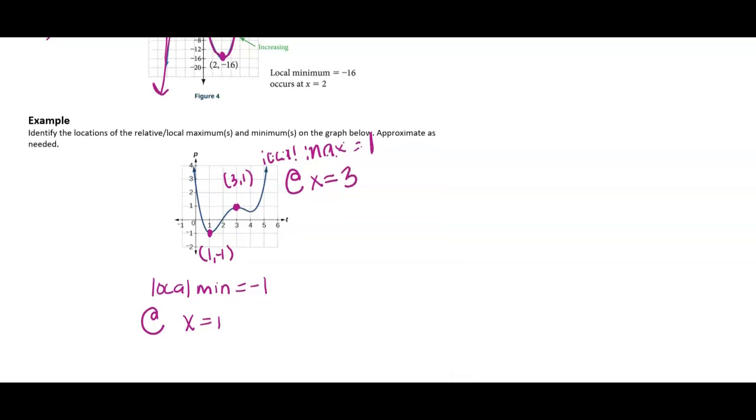Then the function changes from decreasing to increasing one more time. And I'm going to call this the point (4, 1 half), just approximating again as needed. Therefore, I'm going to say that I have a local min of 1 half at x equals 4.